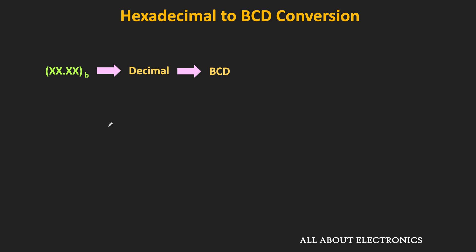Let's say we want to find the BCD equivalent code of the hexadecimal number 5C. First, let's do the hexadecimal to decimal conversion. We have already seen how to convert any hex number into the decimal equivalent. We multiply each hex digit with their corresponding weight. Here in decimal, C corresponds to 12, and the weight of C is equal to 16 to the power 0, which is 1. The weight of digit 5 is equal to 16. So if we do the summation, then it is equal to 92. That means the decimal equivalent of hex number 5C is 92.